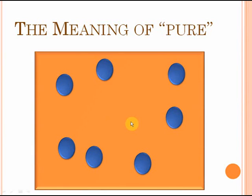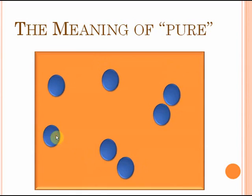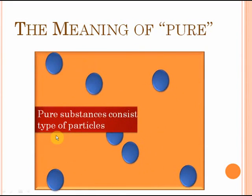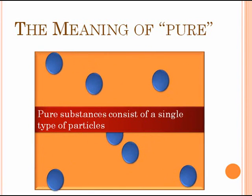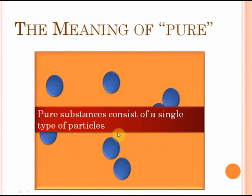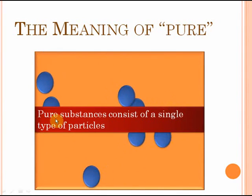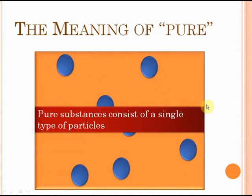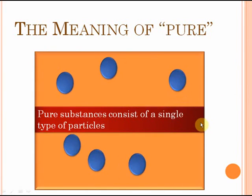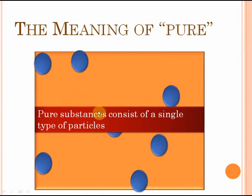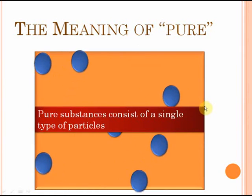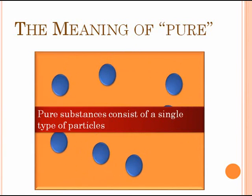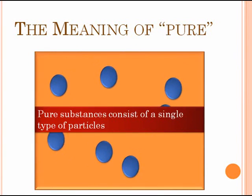Before we understand mixtures, let's understand what the word pure means. Simply put, a pure substance will consist of a single type of particles. So for example, this substance whose particles you can see moving on your screen — it's a pure substance. That is because this substance consists of only one type of blue particles. There are no other types of particles. So all pure substances contain only one single type of particles.